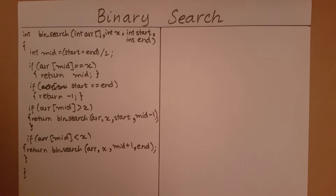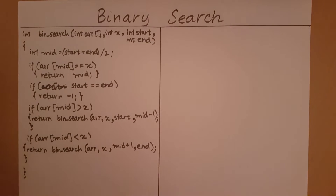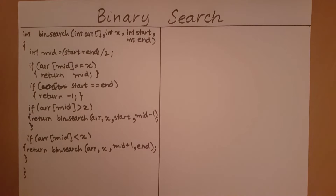What would be the worst case in a binary search algorithm? The worst case is that we keep dividing the array in half and searching for the element, and finally we come to a point where we only have one element in our range of search. Then we realize that even that one element is not equal to the element we are searching for, and we say that the element is not found. This is how the worst case of a binary search would run.